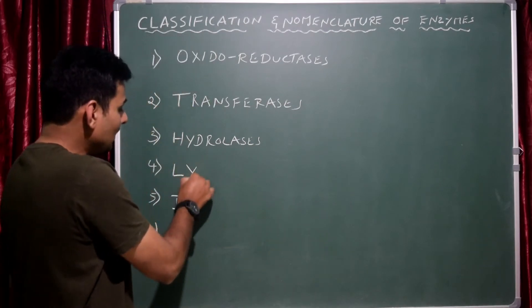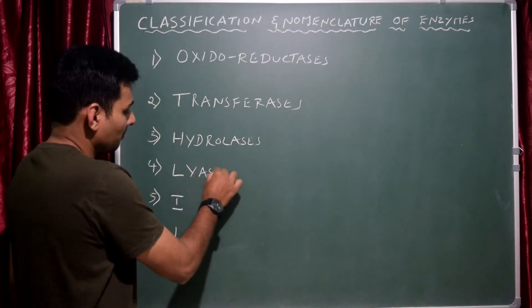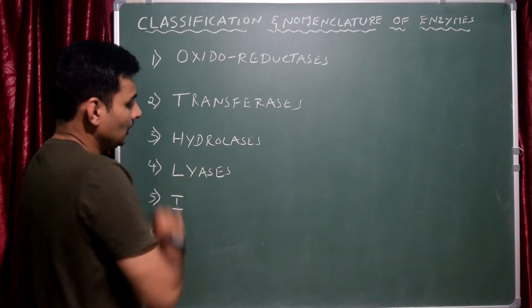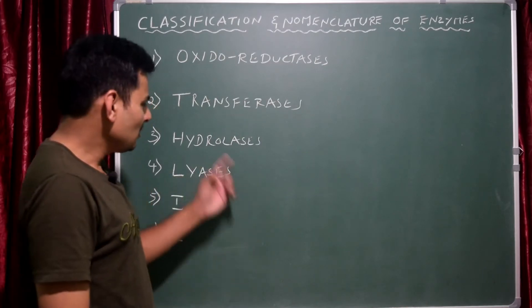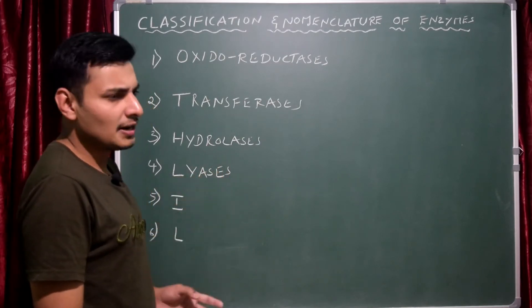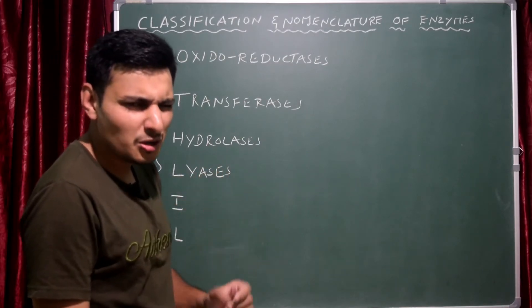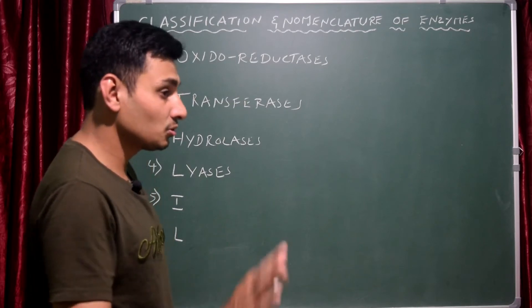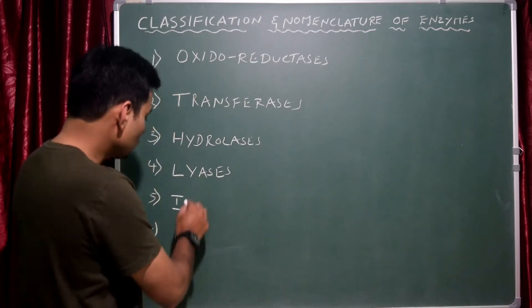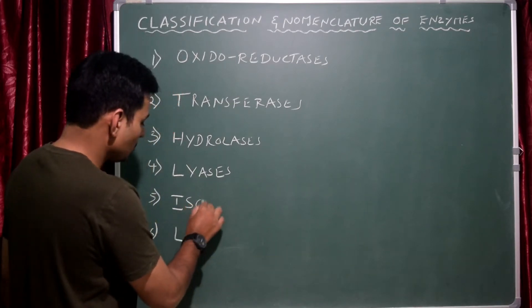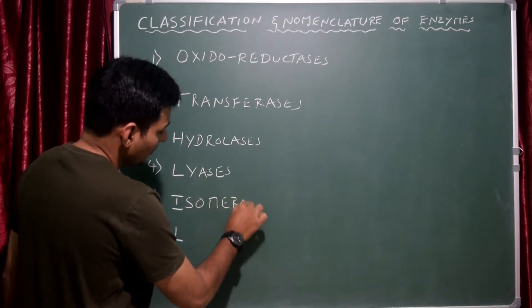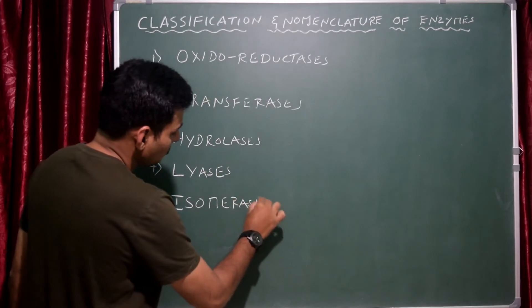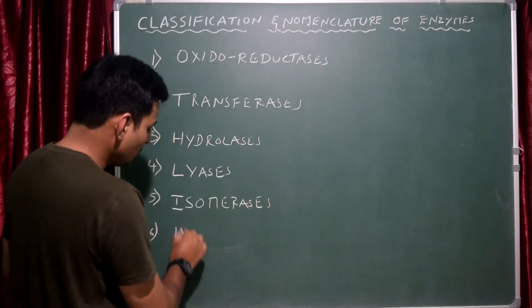Next, L — lyases. Their function is almost similar to hydrolysis but different; it is called differently. Next, I — isomerases. They bring the interconversion of isomers.